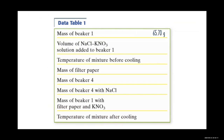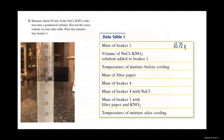Our mass for beaker 1 was 65.70 grams. Measure about 50 mL of the sodium chloride–potassium nitrate solution into a graduated cylinder, record the exact volume, and pour the mixture into beaker 1. We got exactly 50 mL.